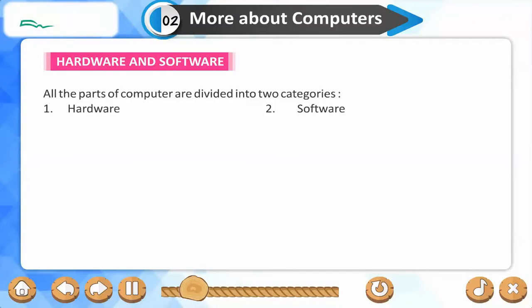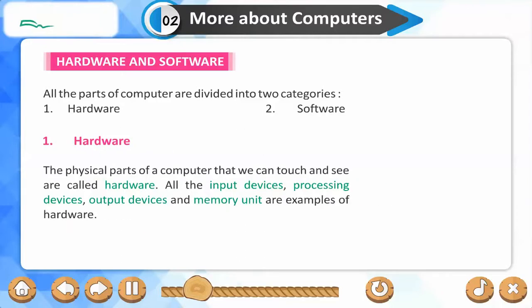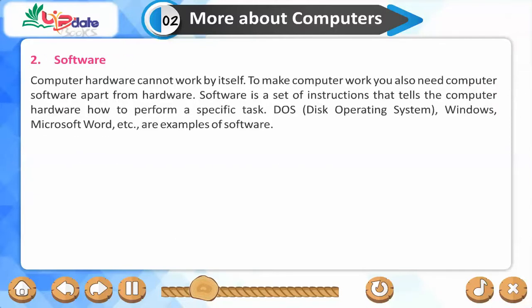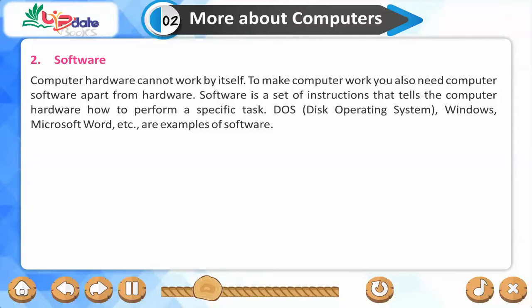All parts of a computer are divided into two categories: hardware and software. The physical parts of a computer that we can touch and see are called hardware. All the input devices, processing devices, output devices and memory unit are examples of hardware. Software is a set of instructions that tells the computer hardware how to perform a specific task.